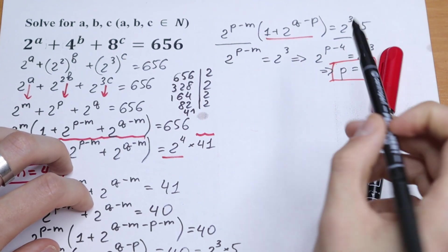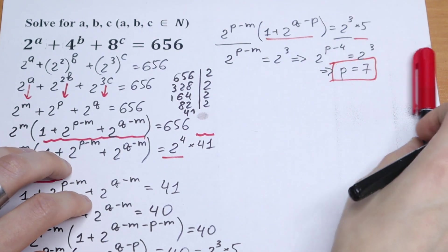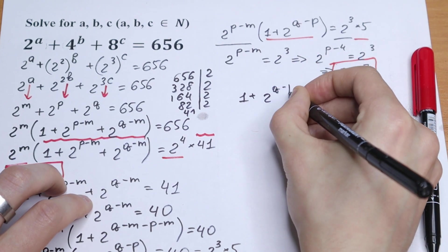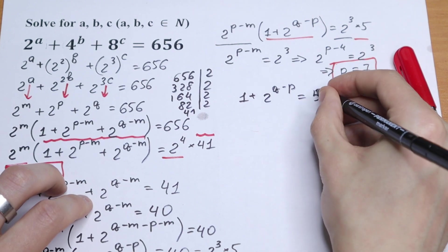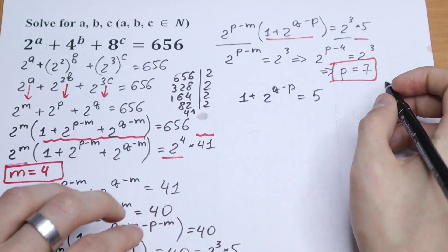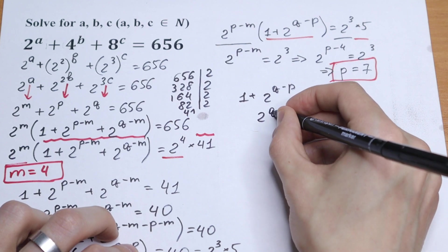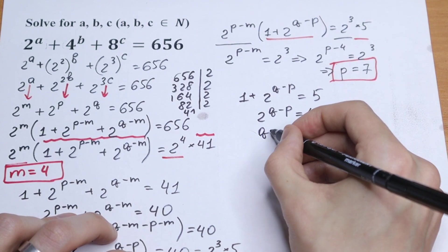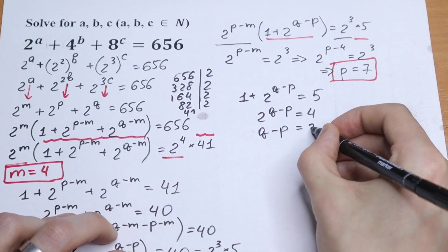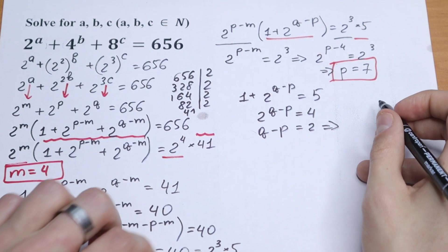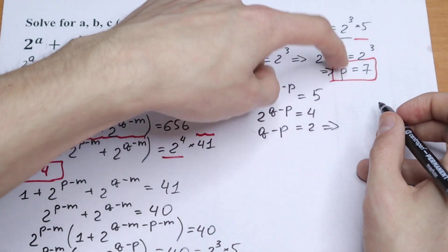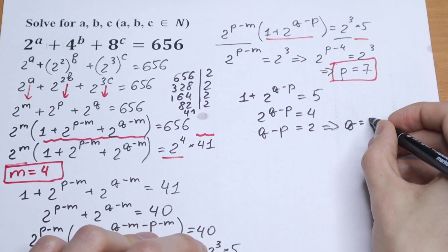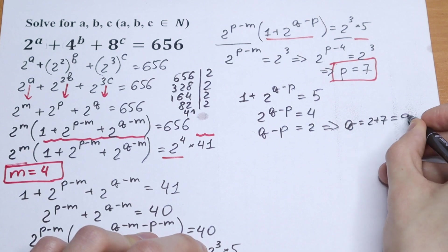The parentheses equal 5: 1 plus 2 to the power (q minus p) equals 5. Bringing the 1 to the right, 2 to the power (q minus p) equals 4, so q minus p equals 2. Therefore q equals 2 plus p equals 2 plus 7, which gives q equals 9.